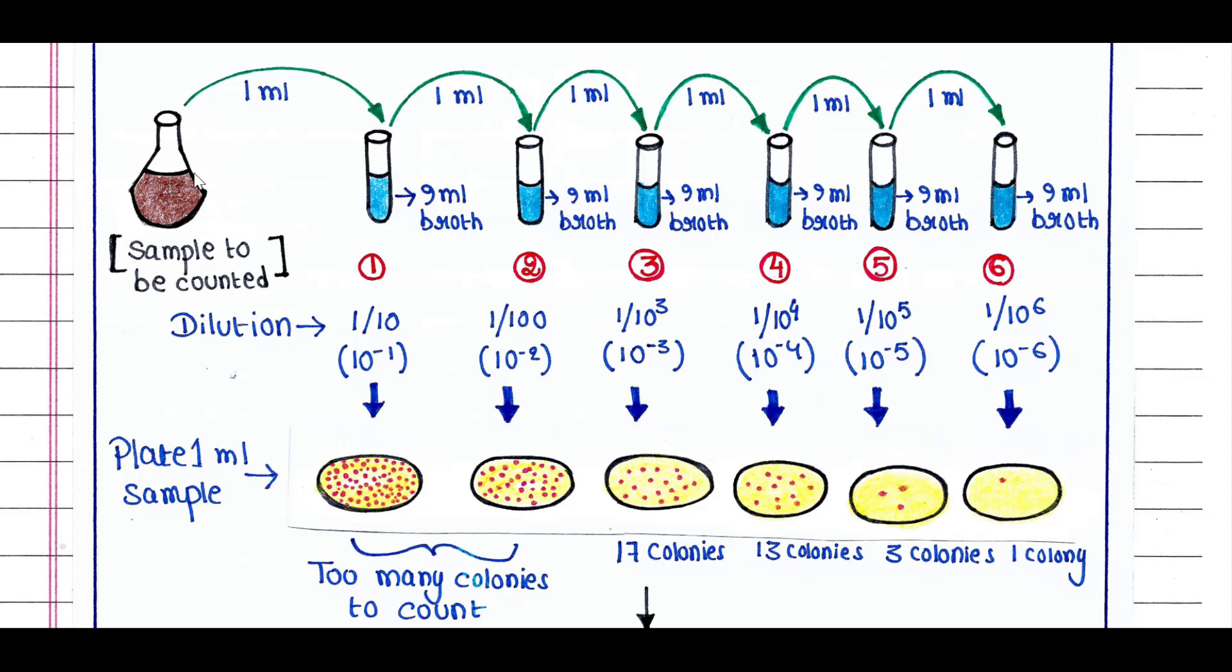Apart from this, we need some test tubes and petri dishes. In this example, we are using six test tubes. In each tube, we have 9 ml of fresh broth to culture bacteria.